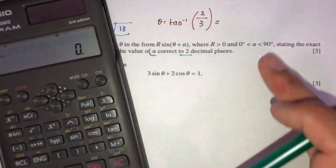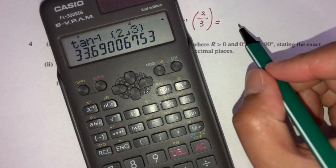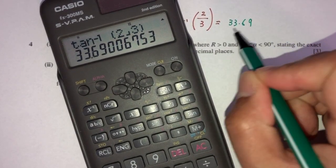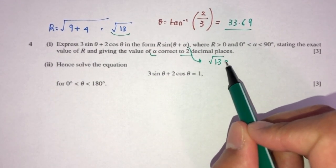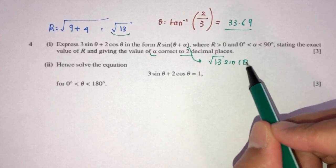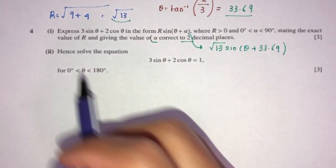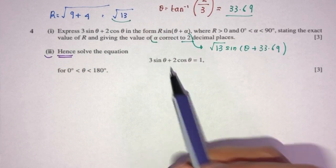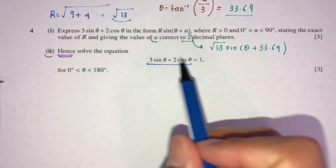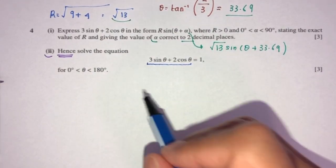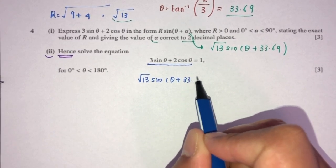This has to be in degrees since the question uses degrees. Tan inverse of 2 over 3 gives 33.69 degrees. So finally, the whole expression changes to root of 13 times sine of (θ + 33.69). Now, 'hence' means using part 1 to solve the equation. We saw from part 1 this expression was changed to that, so let's replace it: root of 13 times sine of (θ + 33.69) equals 1.